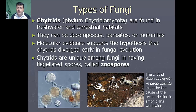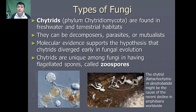The chytrids are also unique amongst fungi because they actually have flagellated spores called zoospores. Specific species of chytrid fungi might actually be the cause of the recent decline in amphibians worldwide.